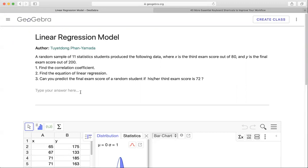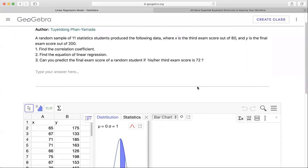And then from that, you find the equation of linear regression line. And number three, can you predict the final exam score of a random student if his or her third exam score is 72?